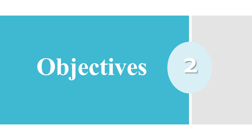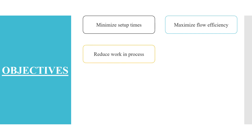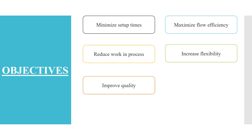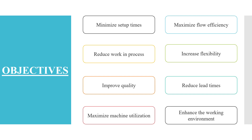Now let us understand the objectives of cellular manufacturing — why we should go for this lean tool. It minimizes setup time, helps to maximize efficiency and productivity, and helps to minimize and control work in progress (WIP). It also helps to increase flexibility and smooth flow in your layout, improves quality, reduces lead time, optimizes machine utilization and efficiency, and enhances the working environment of your organization.